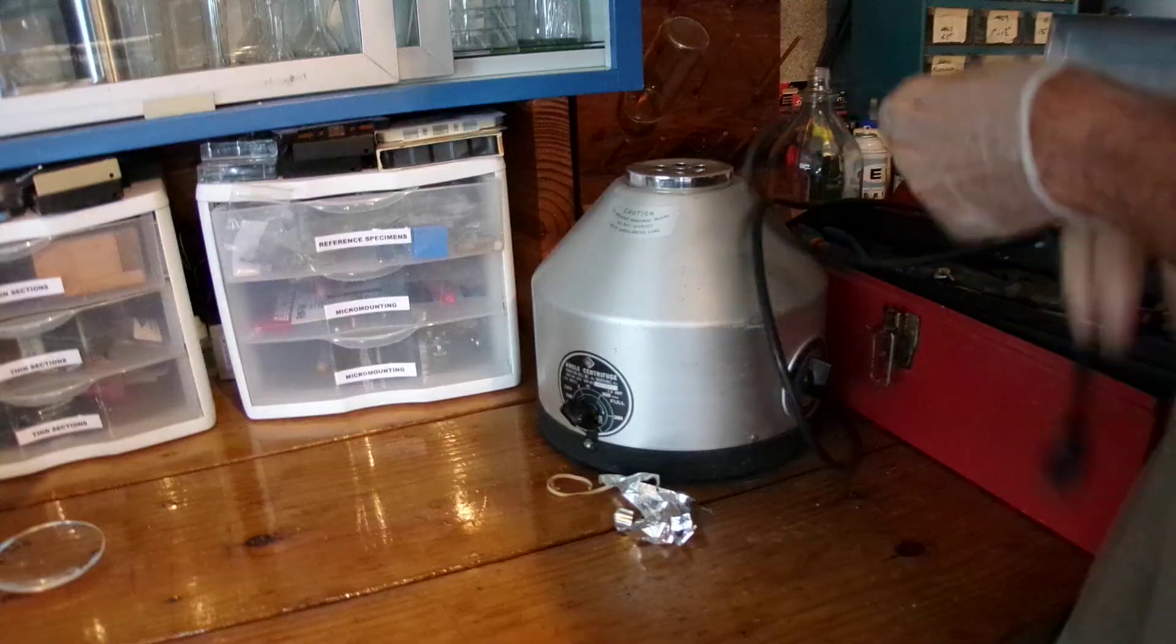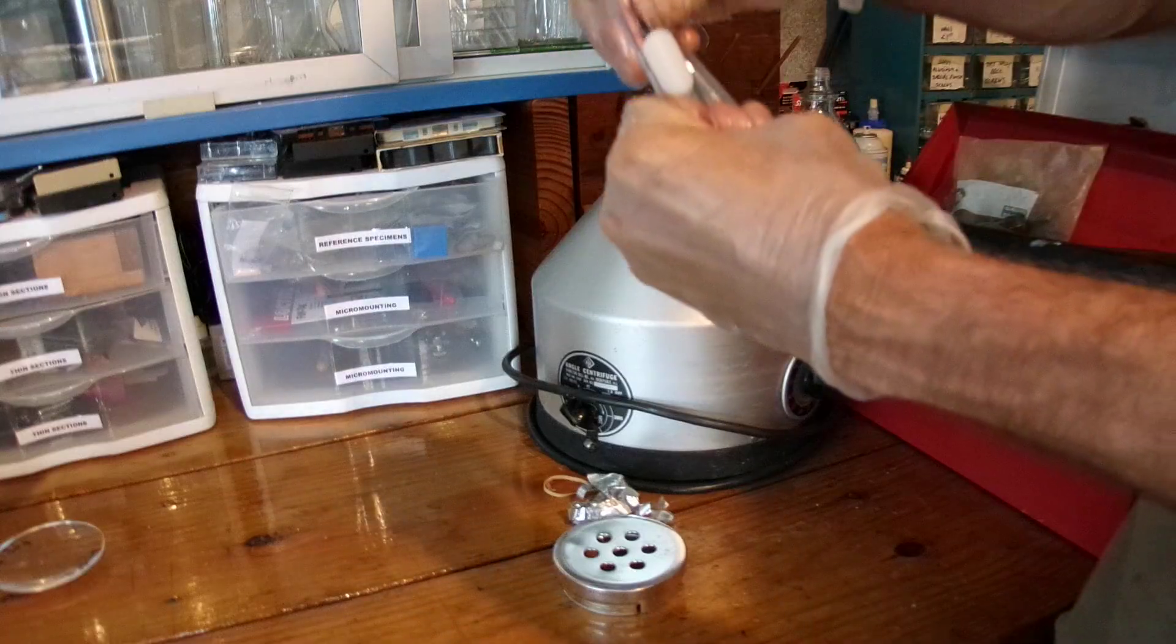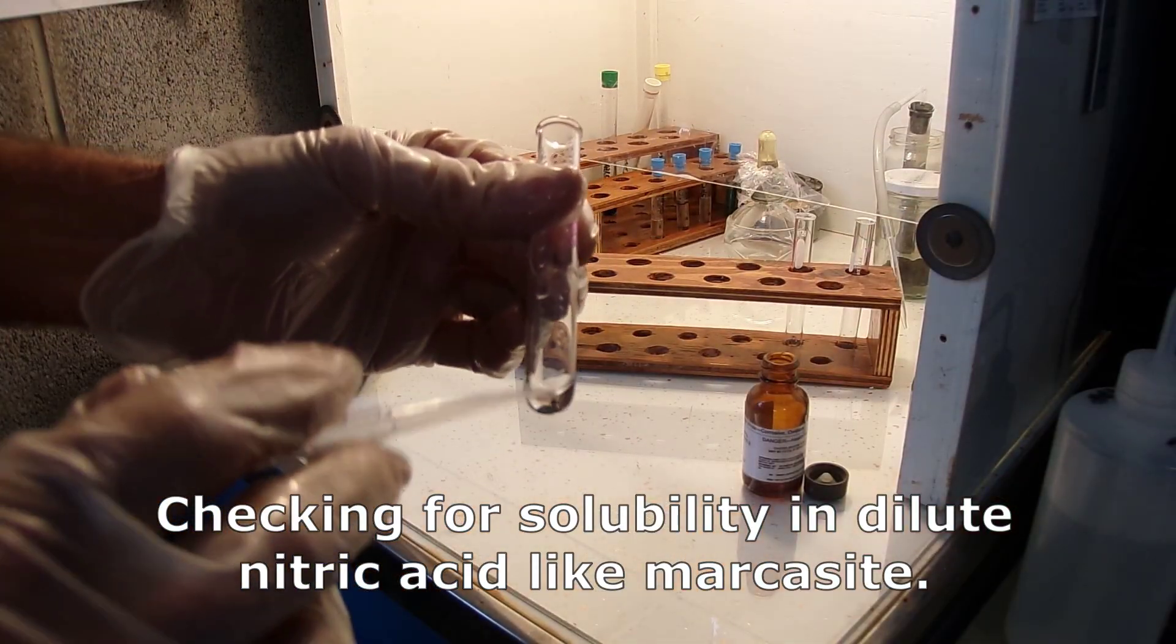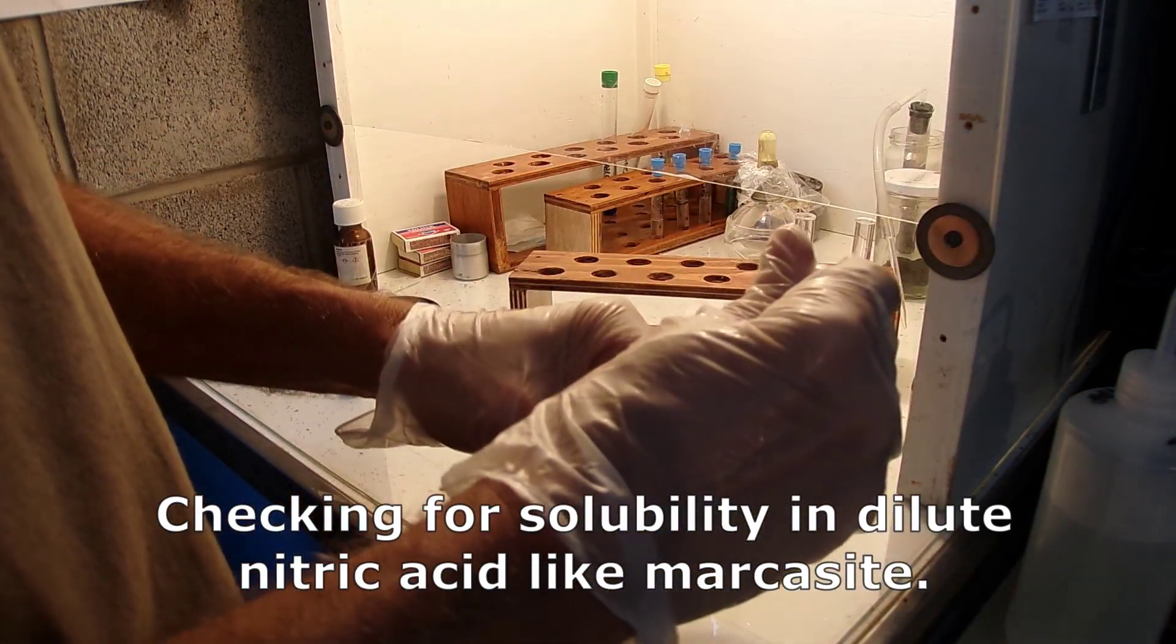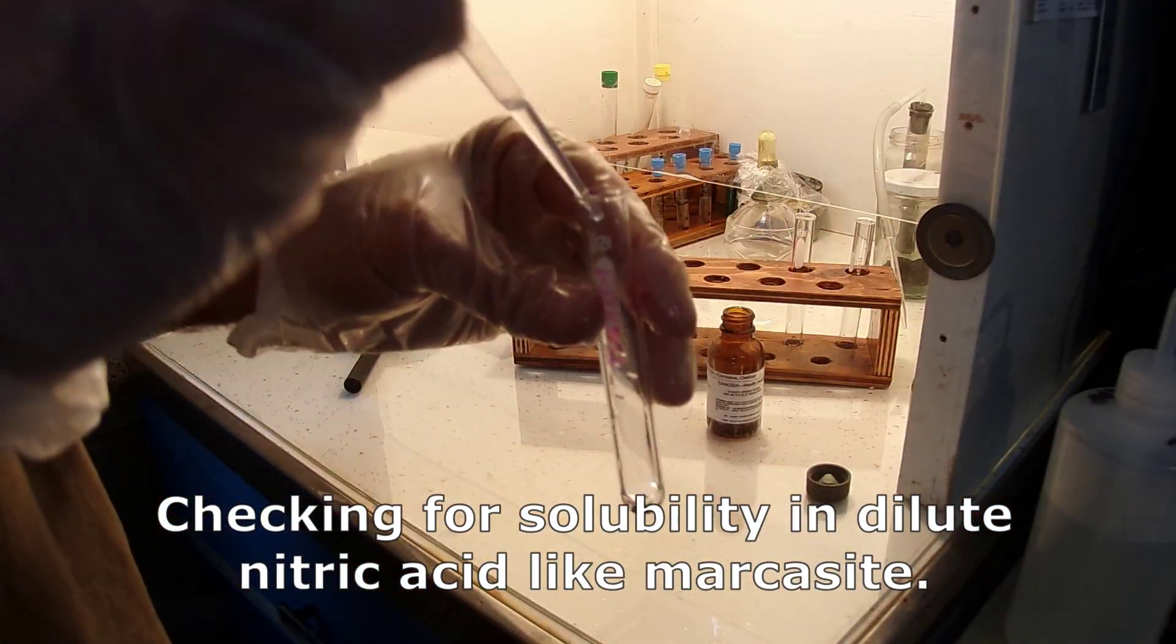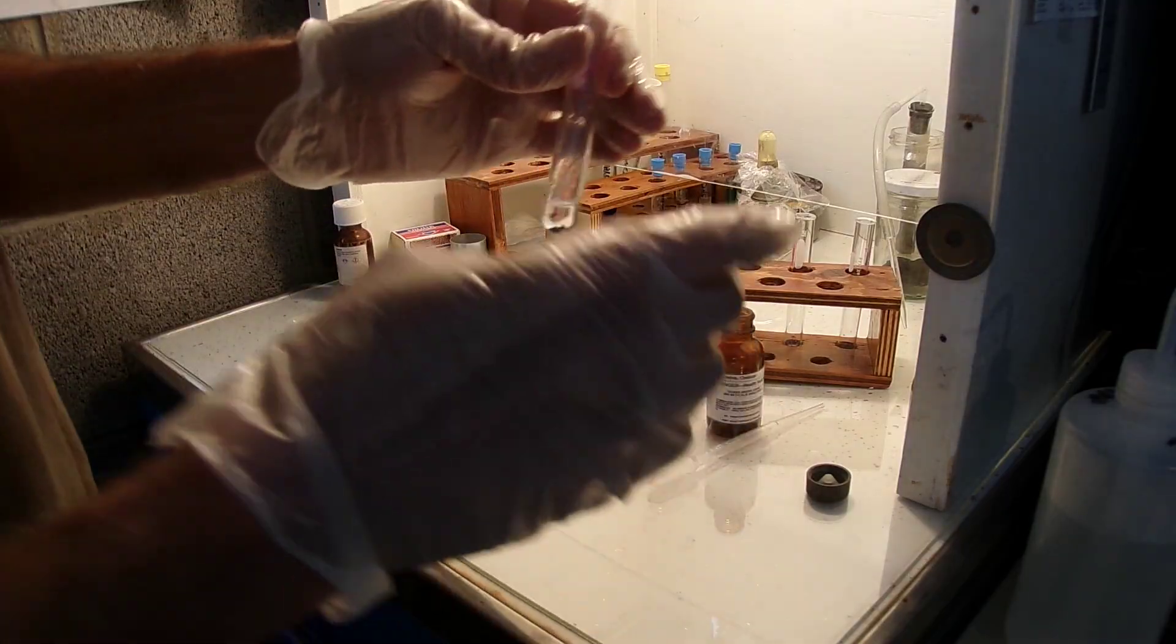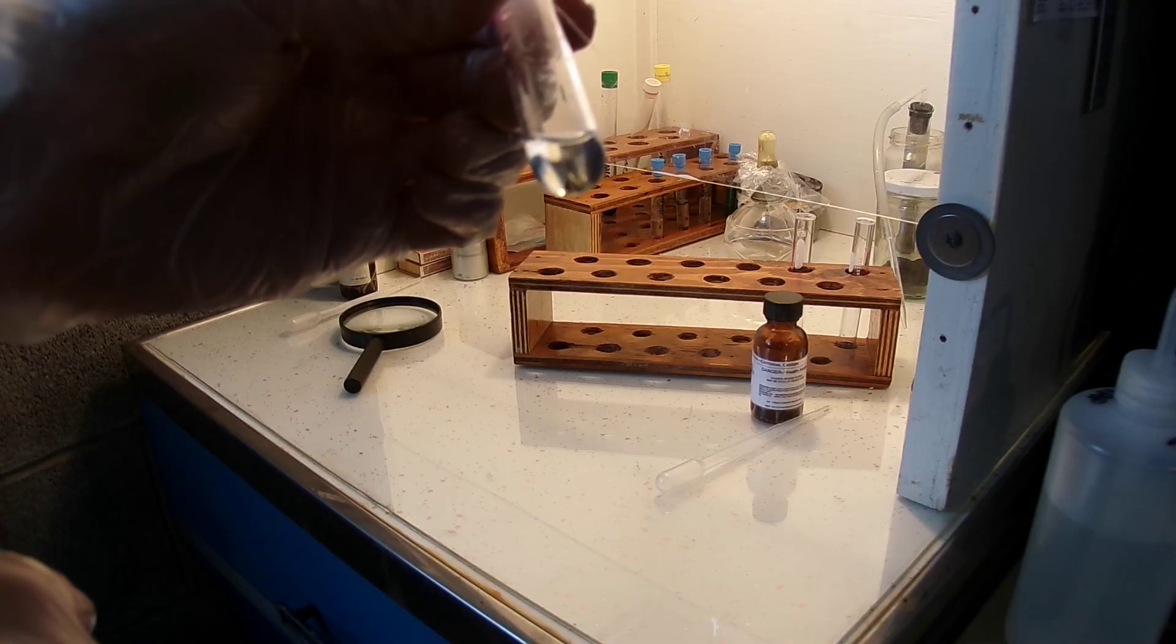I diluted and now centrifuged. And we have some stuff on the bottom. So I'll pour the solution off. Now we're going to try it again. I have a little bit of water in there and I'm going to add some nitric acid, so it's going to be a dilute nitric acid. And it's kind of difficult to tell the difference between marcasite and pyrite because they have the exact same composition. But actually, marcasite will dissolve slightly in dilute nitric acid. It's been a couple of minutes and I haven't seen anything with the dilute nitric acid.